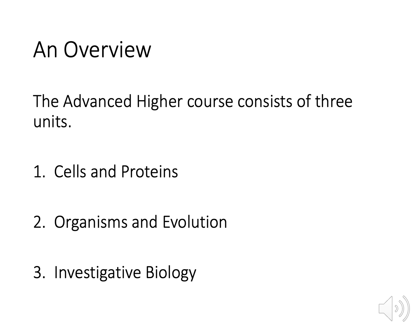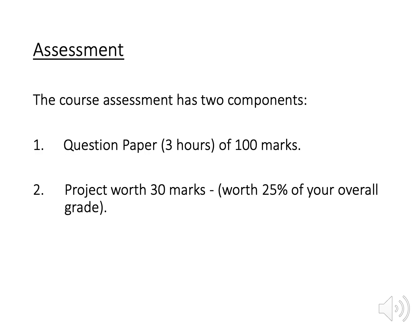We will be starting with the Cells and Proteins unit. The Advanced Higher course is broken up into two components: the exam and the Advanced Higher project. The exam itself is three hours long and is worth 75% of the course, while the project is worth 25% of the course. The project itself will not be started until after the summer holidays, so no need to worry about that quite yet.